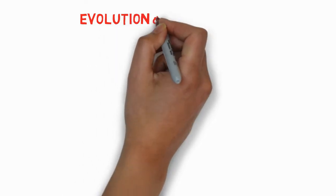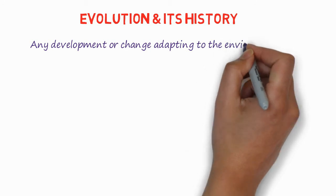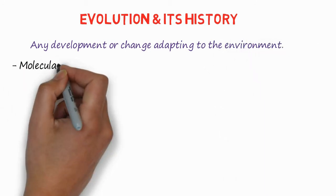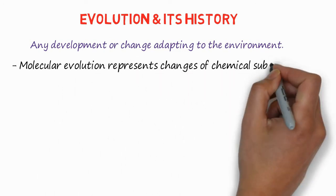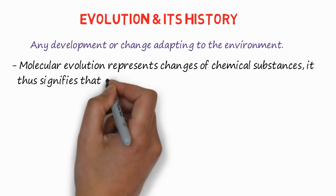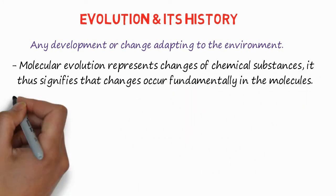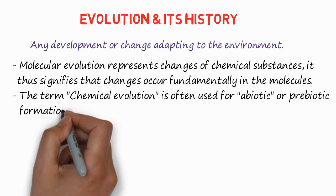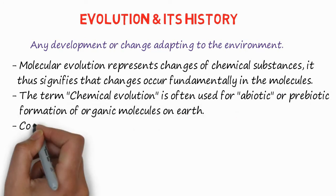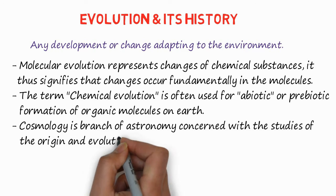First, we need to know evolution and its history. Evolution can be defined as any development or change adapting to the environment. Molecular evolution represents changes of chemical substances. It signifies that these changes occur fundamentally in the molecules. The term chemical evolution is often used for abiotic or prebiotic formation of organic molecules on earth.